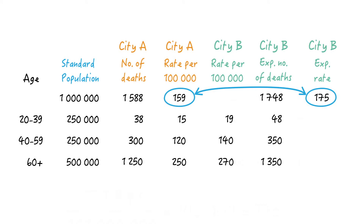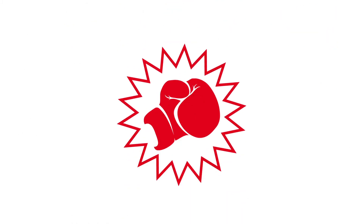And what we see is that after accounting for age, the death rate of city B is actually higher than in city A — the same findings as with the stratified rates. So adjustment is another powerful tool to combat confounding.